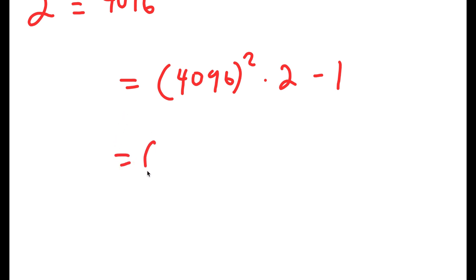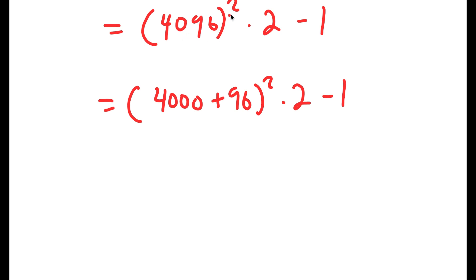And now this is equal to, I'm going to simplify this, 4,000 plus 96 squared times 2 minus 1. The reason I'm doing this is because 4,096 squared is really hard to calculate by itself.